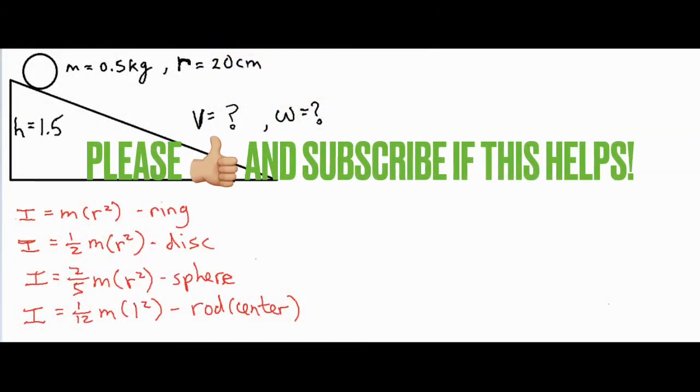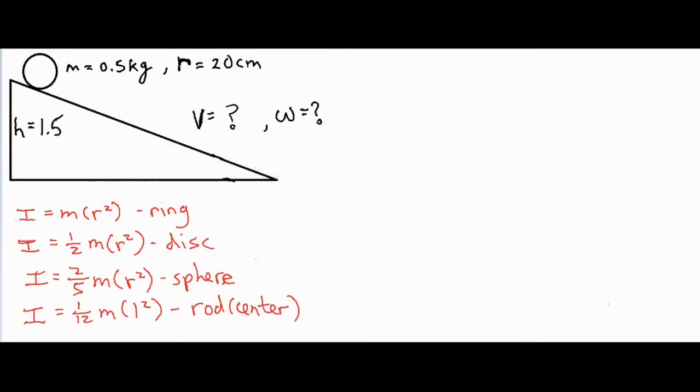In this video I'm going to be talking about how to find the linear velocity and rotational velocity of a ring and a disc. If you let the two go from the top of a ramp, which one is going to get to the bottom first?